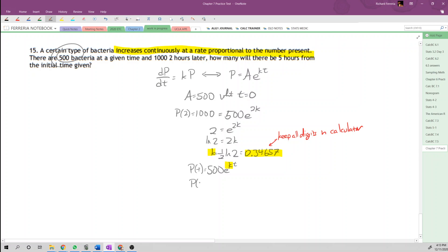This is just straightforward calculating. That's 500 times e to the 5k. There's not a whole lot to do other than chuck this in your calculator. So P(5) equals 2,828.427.